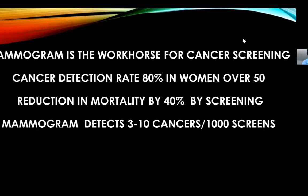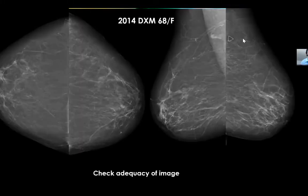We all agree that mammogram is the workhorse for cancer screening. Cancer detection rate is pretty good at 80% above the age of 50 in women. Breast cancer screening results in a reduction in mortality by 40%. Mammogram detects 3 to 10 cancers per 1,000 screens. It is up to you how hard you work to find those cancers — do you want to be detecting 3 or 10 cancers per 1,000 screens? Technique is extremely important in order not to miss cancer.